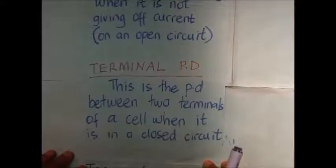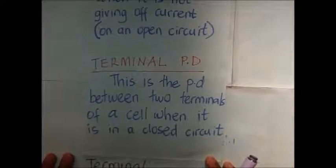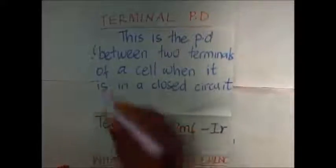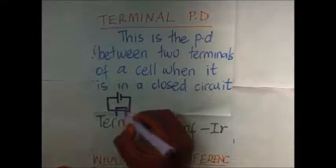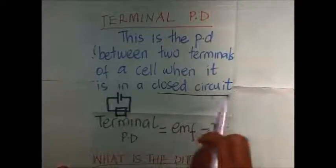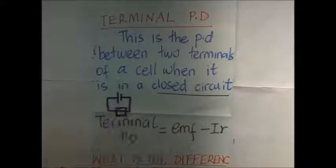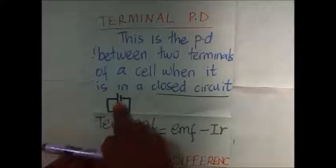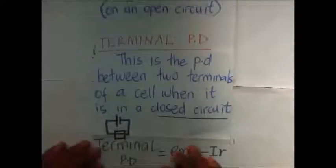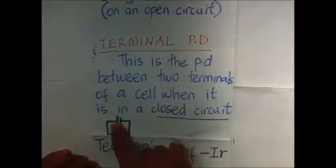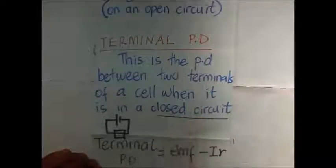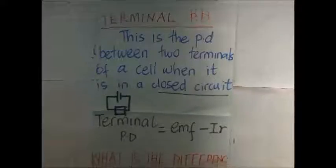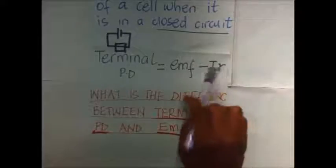The next key definition is terminal potential difference — the potential difference between the two terminals of a cell when it is in a closed circuit. When a cell is in a closed circuit, current is flowing out of it. When it is in an open circuit, no current is flowing, and the potential difference across the ends is the electromotive force. When current flows in a closed circuit, the potential difference between the terminals is the terminal potential difference, given by the electromotive force minus the potential drop across the internal resistance of the cell.